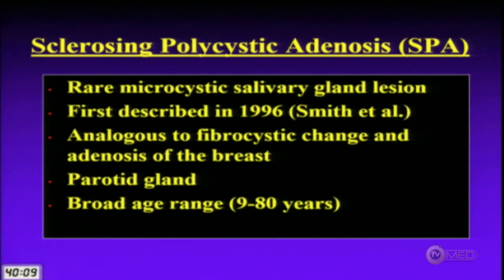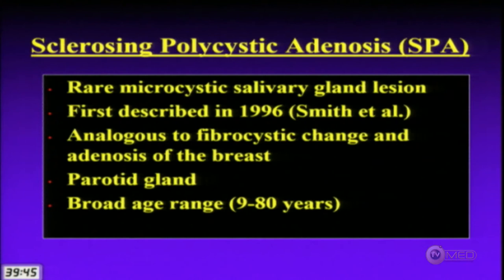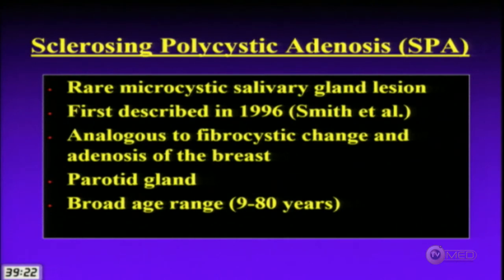Sclerosing polycystic adenosis is a rare microcystic salivary gland lesion first described in 1996 by Smith et al. It's the same disease as fibrocystic change and adenosis of the breast. It primarily occurs in the parotid gland over a broad age range — I had a case in a 12-year-old where we were worried about mucoepidermoid carcinoma, but excision confirmed SPA, allowing a limited resection.